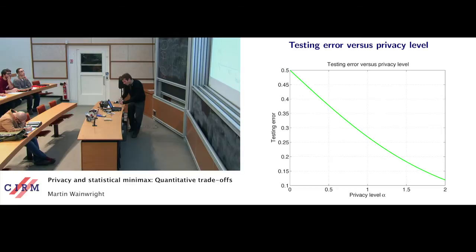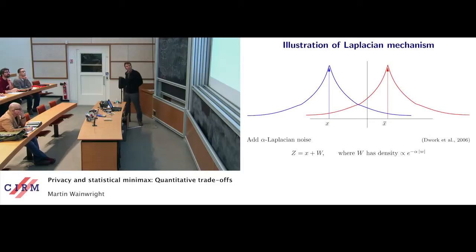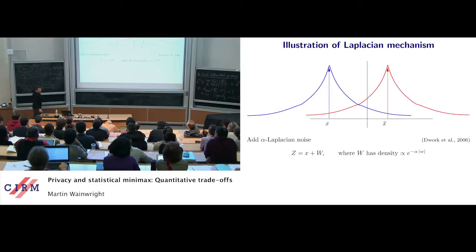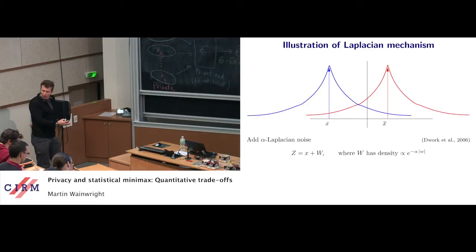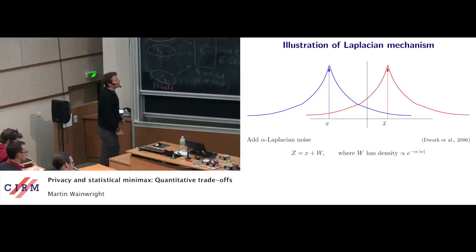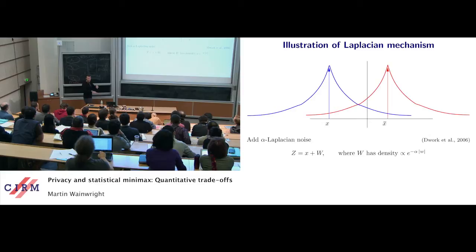What are mechanisms for privacy? Probably the most common is the Laplacian mechanism — very simple: take your data and add Laplacian noise with a scale parameter of roughly 1/alpha. If you want more privacy, as alpha goes to zero, 1/alpha blows up — you're adding higher variance noise. The heavy-tailedness of Laplacian noise, the fact that it has exponential rather than sub-Gaussian tails, is important for differential privacy.